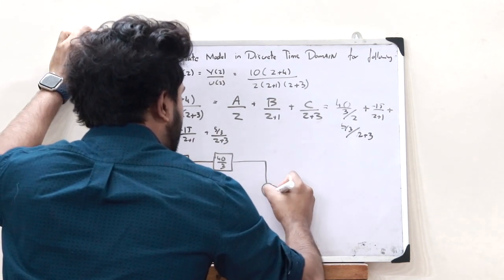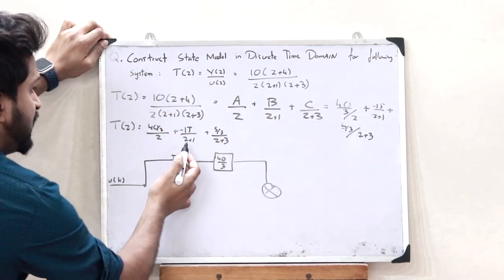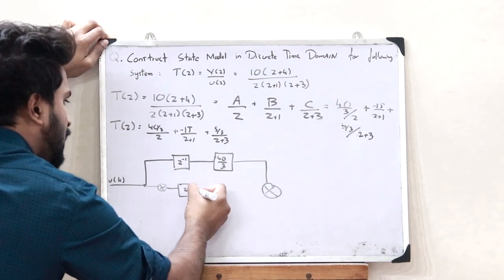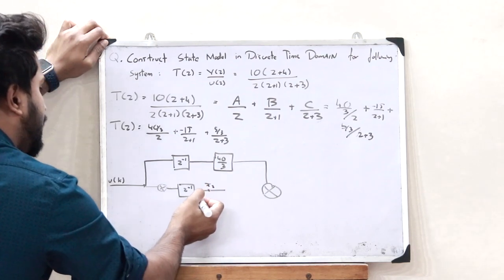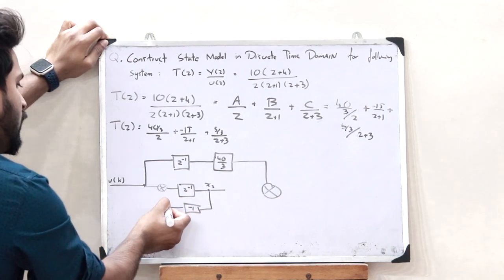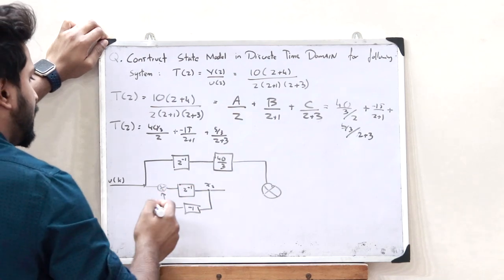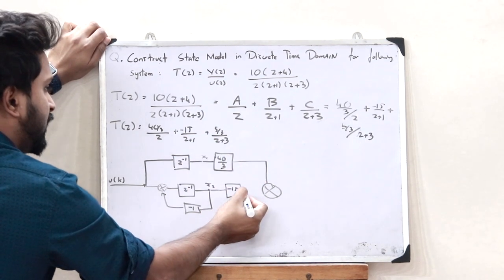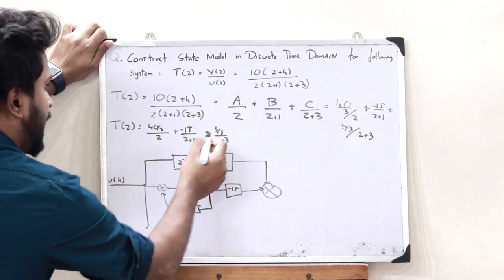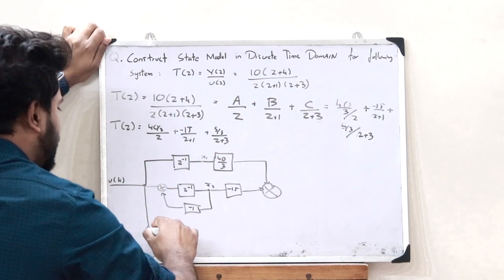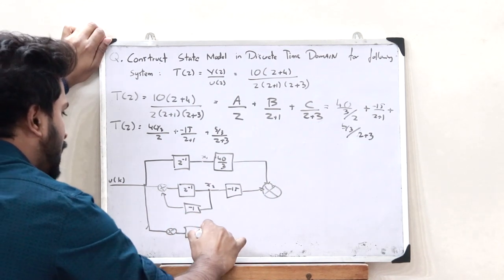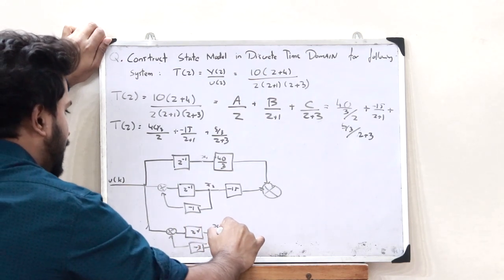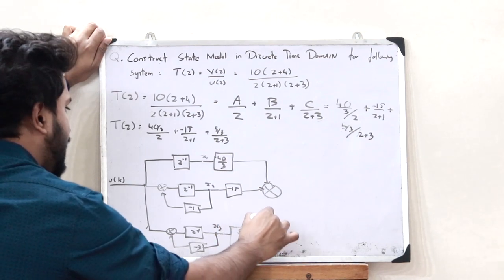The second term is −15/(Z + 1). Since we have (Z + 1) in the denominator, the signal passes through Z raised to minus 1, giving state variable X2. It then passes through a gain of minus 1 and is fed back, forming the (Z + 1) loop at X1. The numerator gain is −15, which is added at the summing junction. Similarly, the third term 5/3/(Z + 3): the signal passes through Z raised to minus 1, giving X3, then through minus 3 feedback, and a gain of 5/3 is added at the output summing junction.